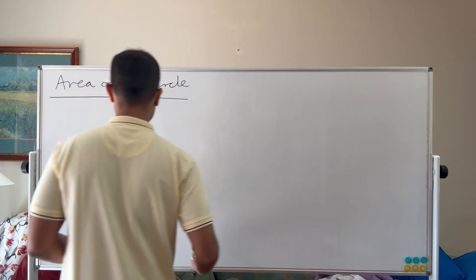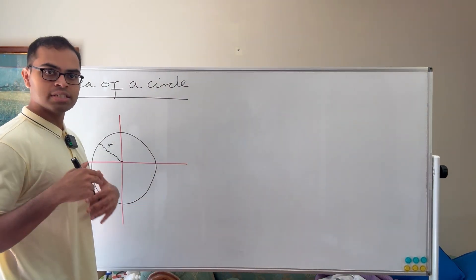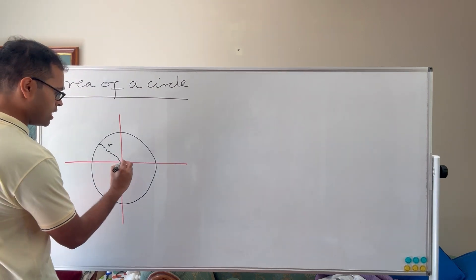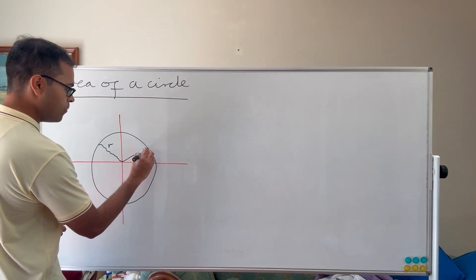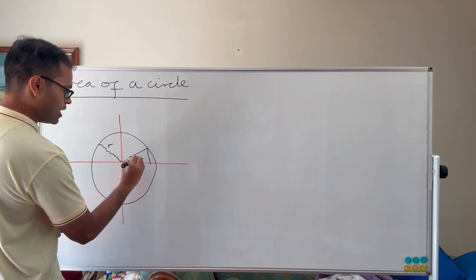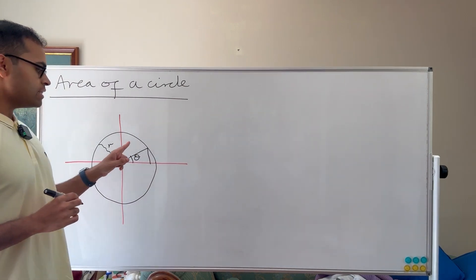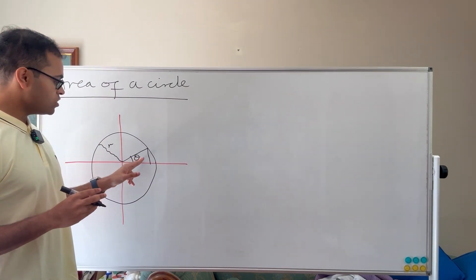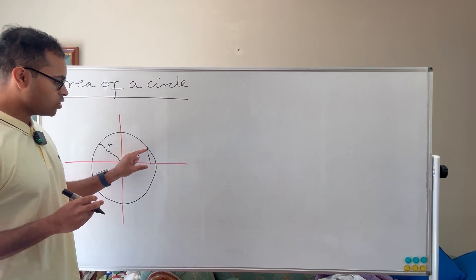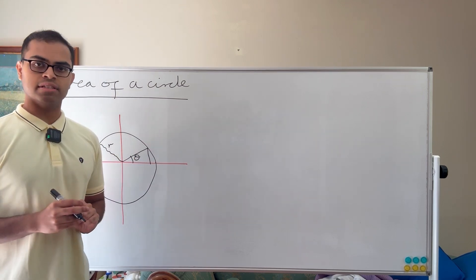What we're going to do is take a triangle subtending an angle of θ radians. So let me just draw this triangle here and put θ here. Now as θ goes to zero, as that angle goes to zero, this triangle is going to get closer and closer to this sector of the circle.